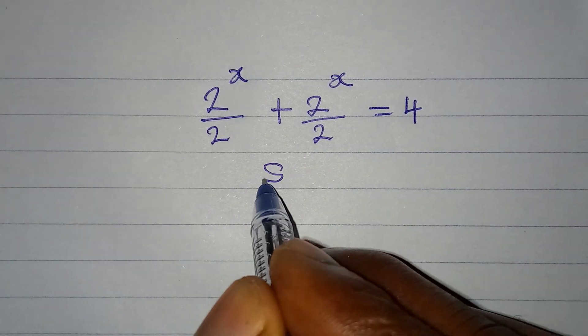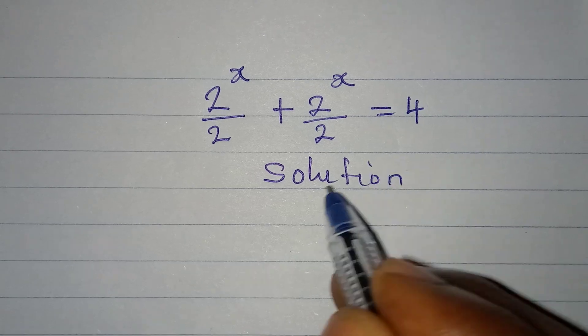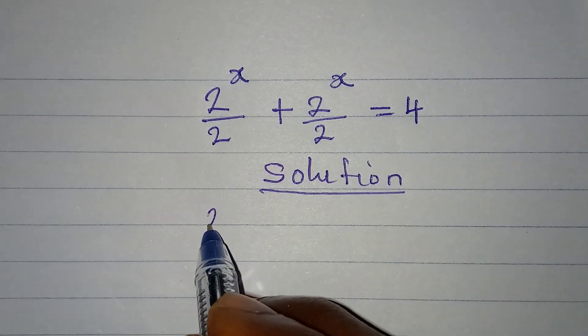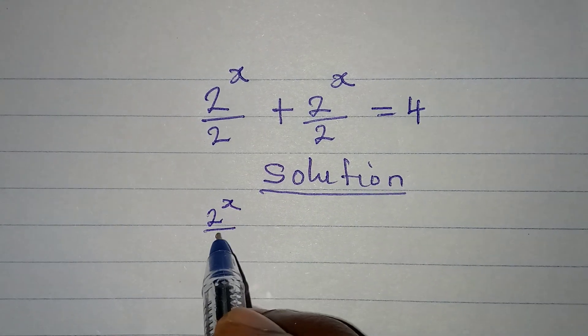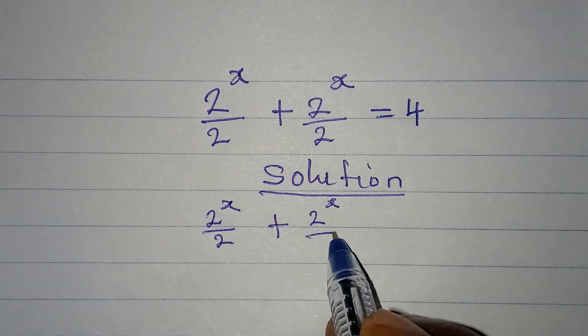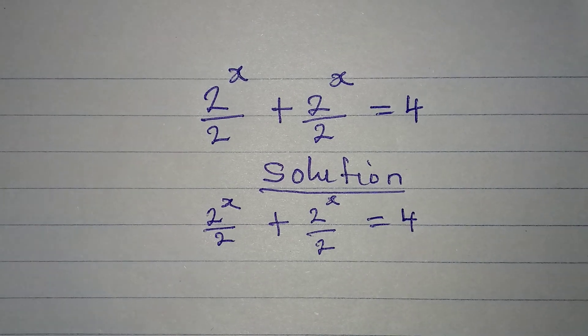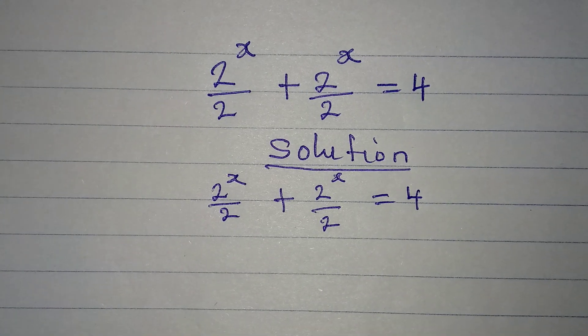Hello everyone, let's solve this problem. We have 2^(x/2) + 2^(x/2) = 4. If you're looking at this, it could be difficult for you to deal with, but it's very simple.